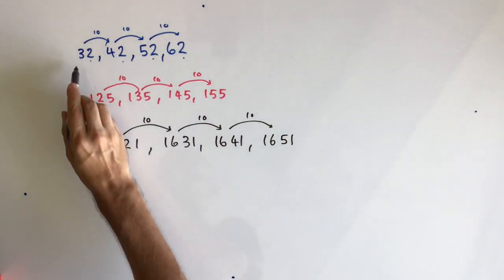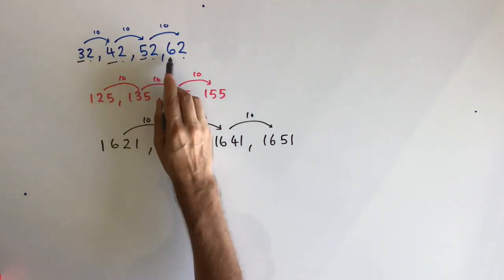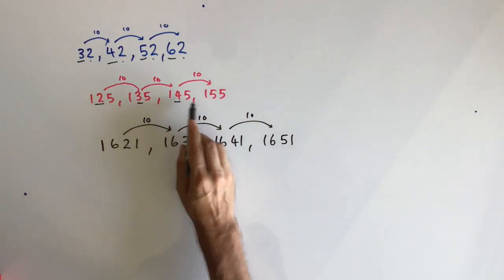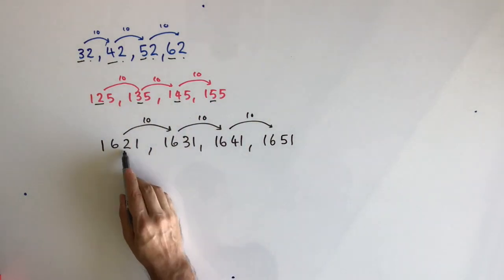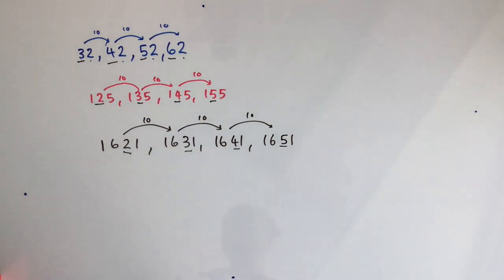But the number that's changed is the tens number. You can see it's gone up in value by 10 every single time. And that's happened regardless of the position that the tens number is in. So when you're counting in groups of 10, make sure that your tens number always goes up in value by 10.